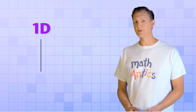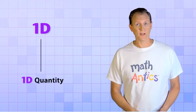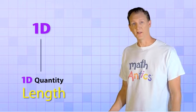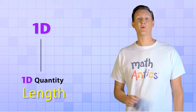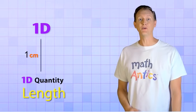To measure a 1-dimensional object, we need a 1-dimensional quantity, which we usually call length. The length of this line happens to be exactly 1 centimeter, which is a common unit for measuring length.